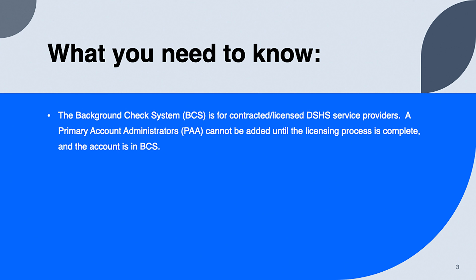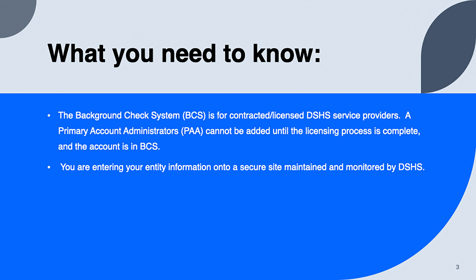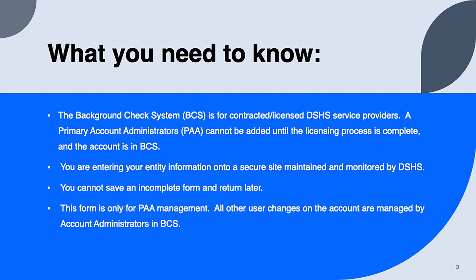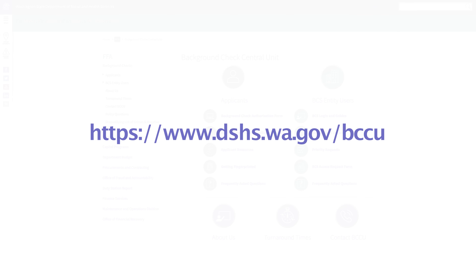A Primary Account Administrator, or PAA, cannot be added until the licensing process is complete and the account is in BCS. You are entering your entity information onto a secure site maintained and monitored by DSHS. You cannot save an incomplete form and return later. This form is only for PAA management. All other user changes on the account are managed by Account Administrators in BCS.